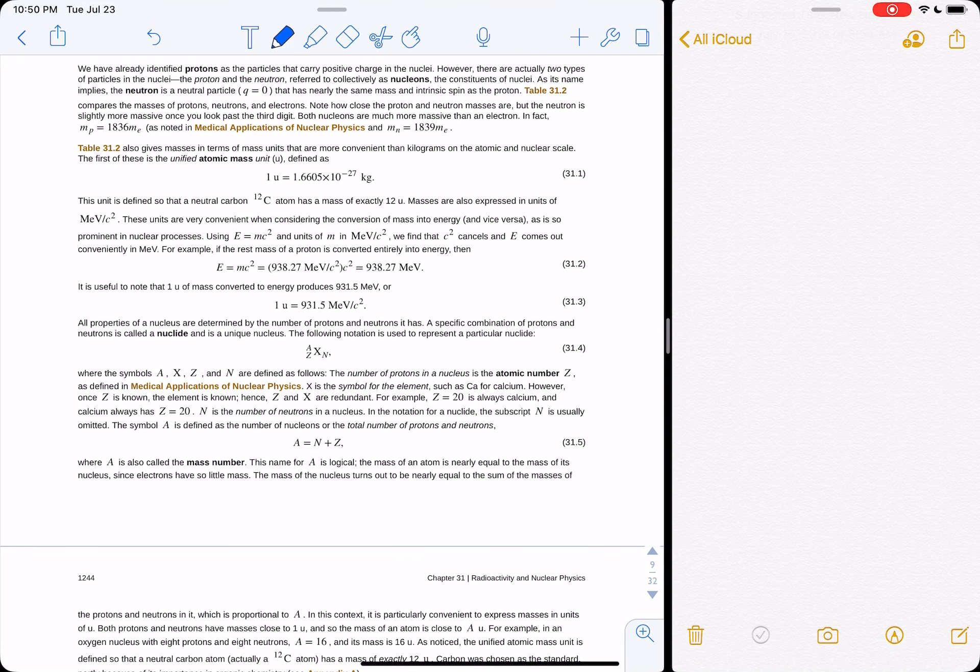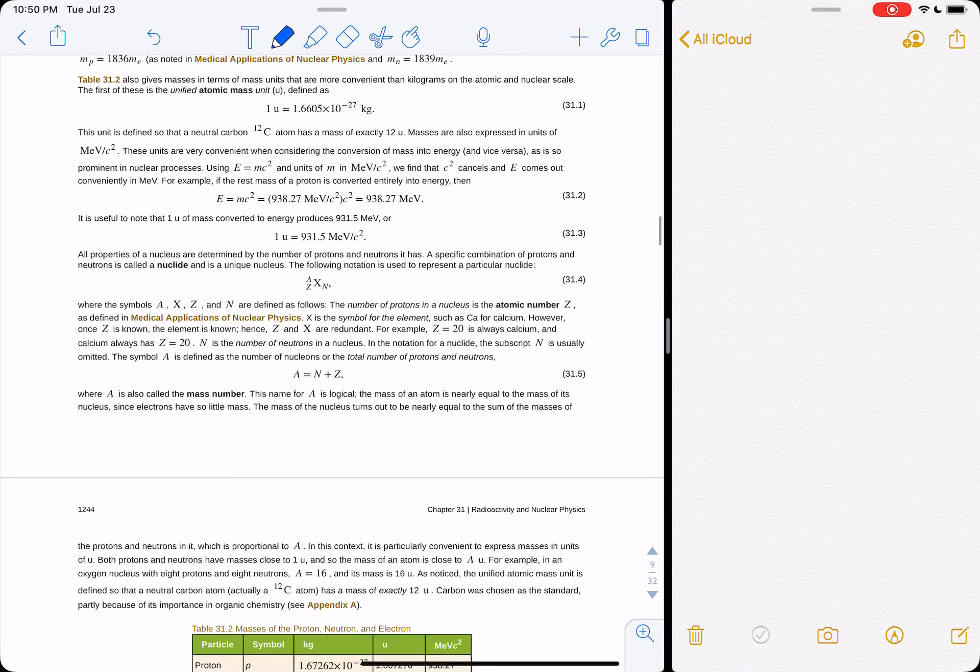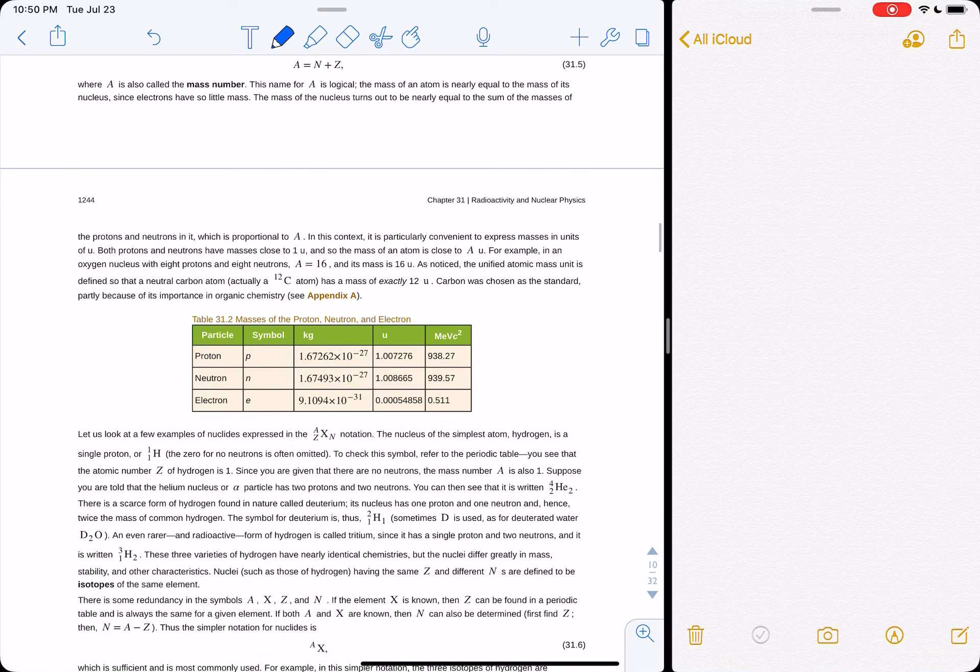However, the table 31.2, where is that? Here it is, table 31.2. So you've got the proton, you've got the neutron, the electron. You've got the mass in kilograms, and you've got the mass in atomic mass units. And you've got the mass in E equals mc squared.